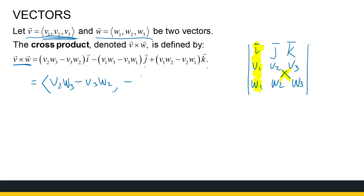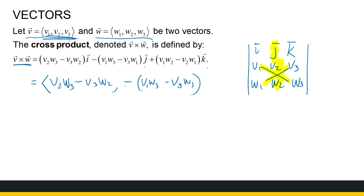Then we put a minus sign in front of the second entry. If you've worked with determinants it'll make sense where that comes from, but if not, just remember we put a minus there to keep the pattern. For the second entry we ignore the second column and compute V1 times W3 minus V3 times W1. For the third entry we ignore the third column and compute V1 times W2 minus V2 times W1.